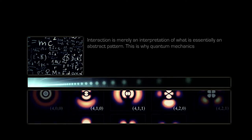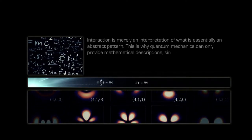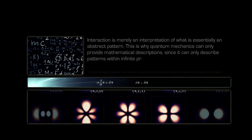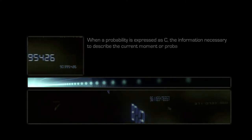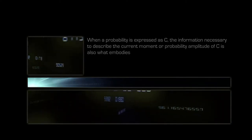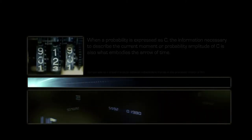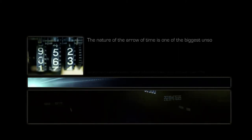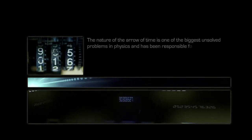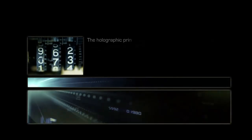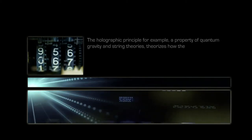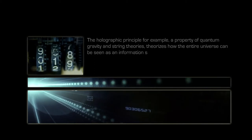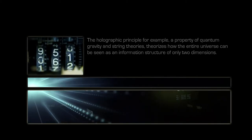Interaction is merely an interpretation of what is essentially an abstract pattern. This is why quantum mechanics can only provide mathematical descriptions since it can only describe patterns within infinite probabilities. When a probability is expressed as C, the information necessary to describe the current moment or probability amplitude of C is also what embodies the arrow of time. The nature of the arrow of time is one of the biggest unsolved problems in physics and has been responsible for many new popular interpretations. The holographic principle for example, a property of quantum gravity and string theories, theorizes how the entire universe can be seen as an information structure of only two dimensions.